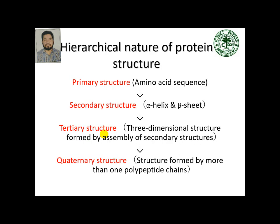Since the linear structure will be quite big, just like DNA it cannot be accommodated in a small volume of the cell. So nature has devised mechanisms for further folding and compactness in the structure. For proteins, further folding is required in the form of alpha helix, beta sheet, and turns — these are the local structures formed by interactions between neighboring amino acid residues.